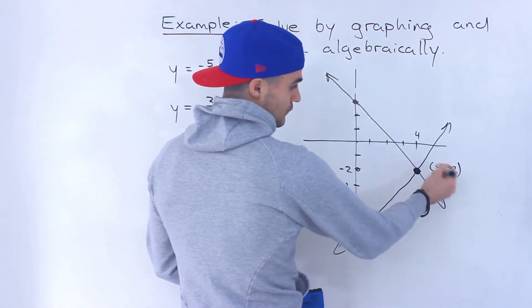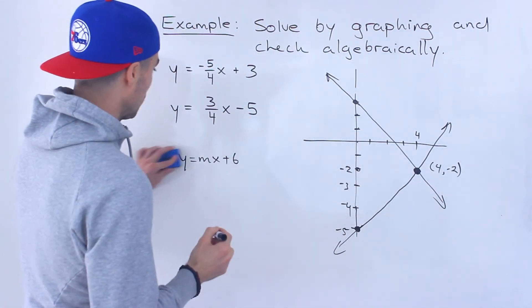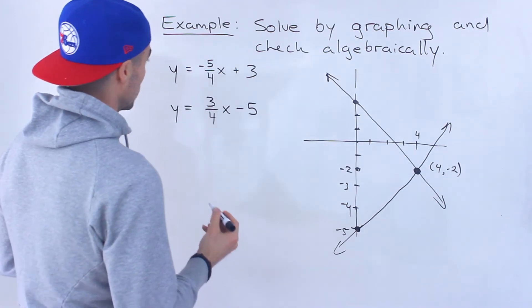Right? So the answer is 4 and negative 2. That's where these two lines are going to intersect. Now, what if we were to check this answer algebraically?